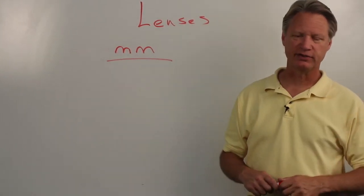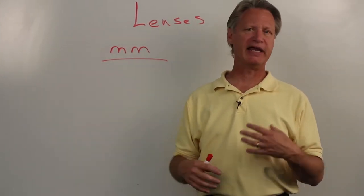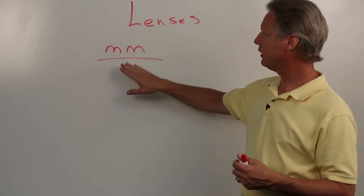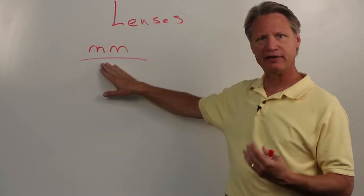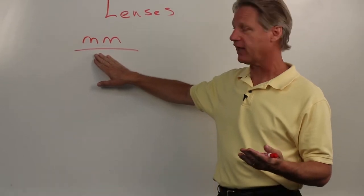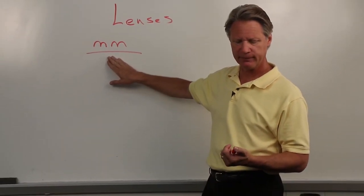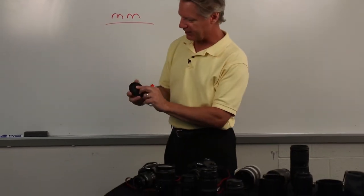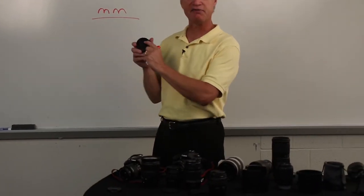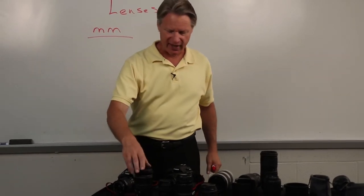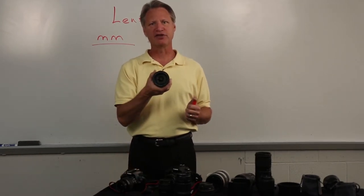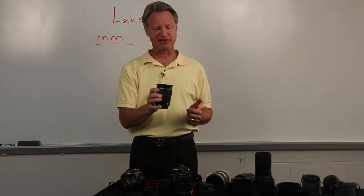Today we're going to talk about lenses, and there's a lot of information we can gain simply by looking at a lens. Everything as it relates to a lens — the information on it — is expressed in millimeters. So if we simply look at the lens cap, on the back side it says 77mm, meaning the lens cap is 77mm and the diameter of the front element of this lens is 77mm.